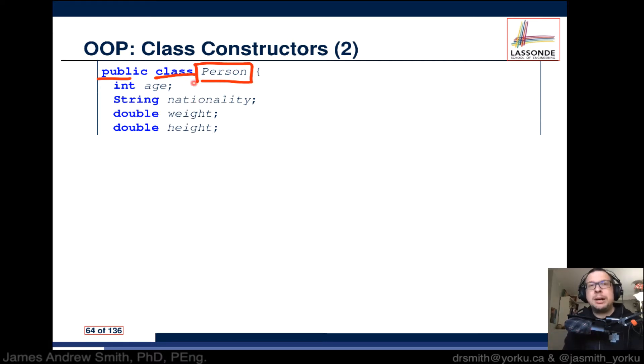You can see it's a public class named Person. That's the blueprint for objects we'll be creating. In it you can see these attributes: we have age that's an integer, nationality as a string, and weight and height as double precision floating point numbers.